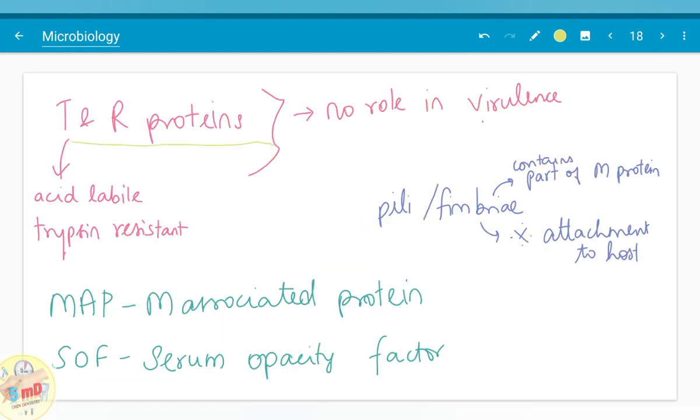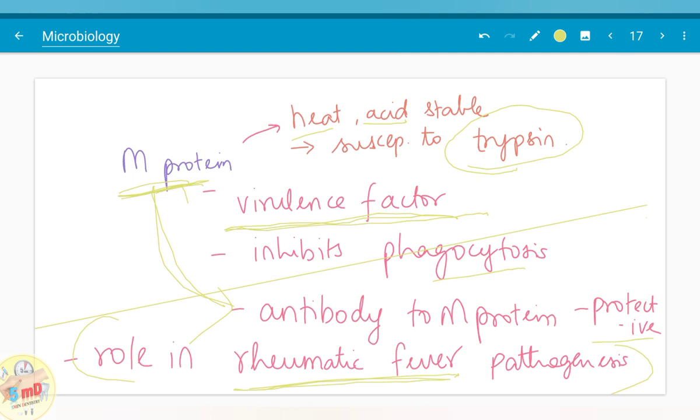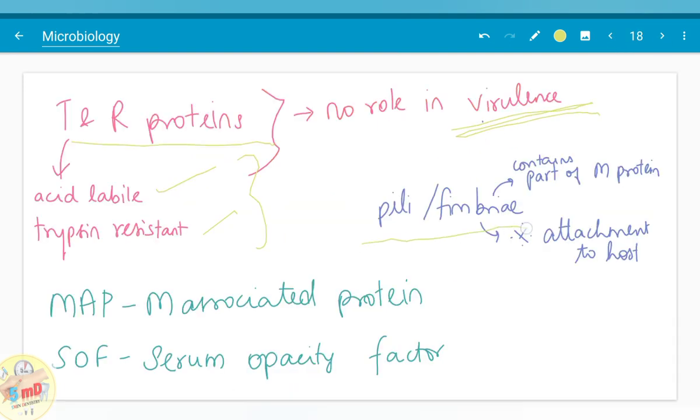The remaining proteins are T and R proteins. They have no role in virulence. They are acid labile and trypsin resistant in contrast to the M protein. Pili or fimbriae as commonly called contain part of M protein and this fimbria is responsible for the attachment to the host.